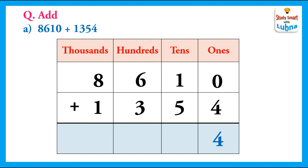The next step is we will add the tens. 1 plus 5 equals 6. We write 6 in the tens column. Now we will add the hundreds. 6 plus 3 equals 9. We write 9 in the hundreds column. Now we will add the thousands. 8 plus 1 equals 9. We write 9 in the thousands column. So, the answer is 9964.